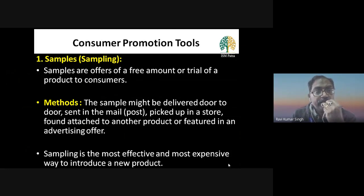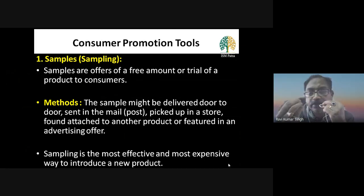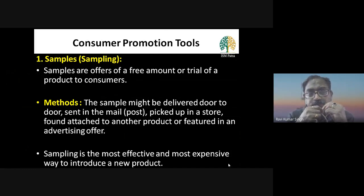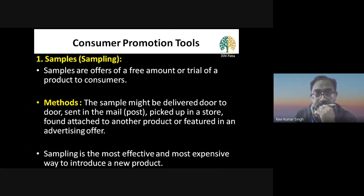The first tool is sampling. Samples are offers of a free amount or trial of a product to consumers. For example, a small sachet of shampoo, a small sachet of tea, or a small packet of biscuit as a sample. Samples are given to induce trial, usually at the introductory stage of the product life cycle.